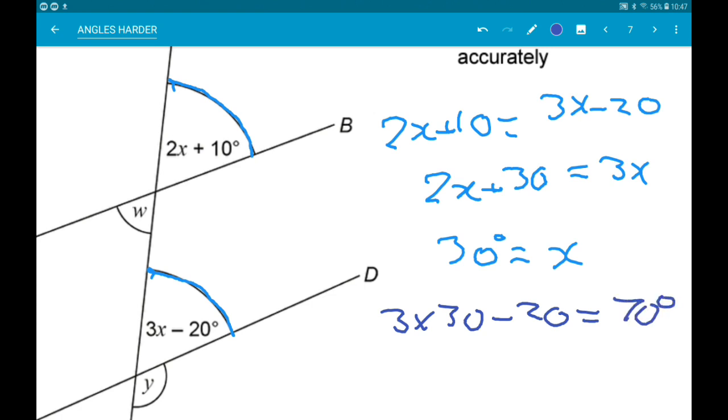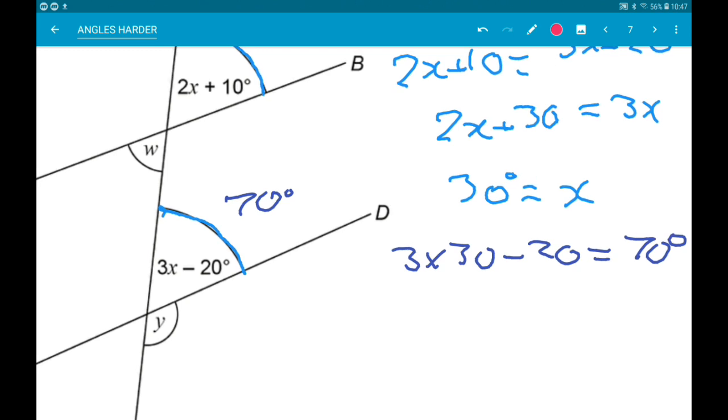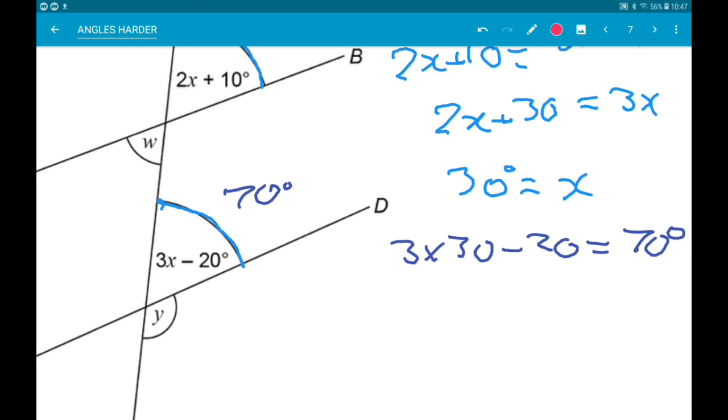Okay, so that's that angle. Now, angle Y lies on a straight line with 70 degrees. So Y add 70 is 180 degrees. So Y is 110 degrees.